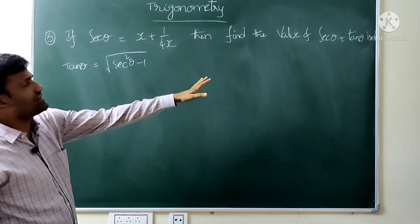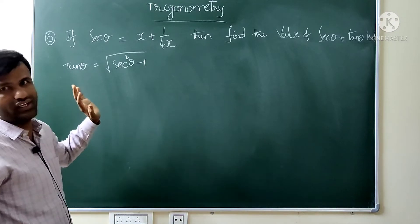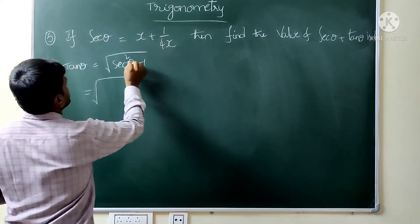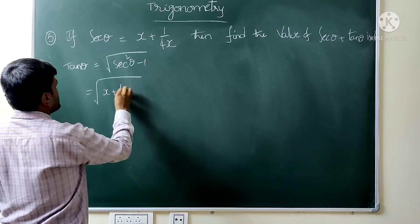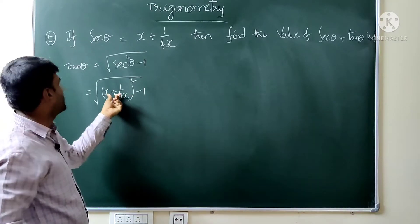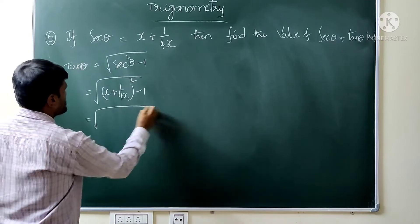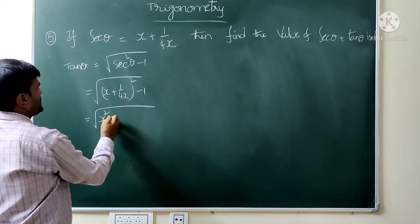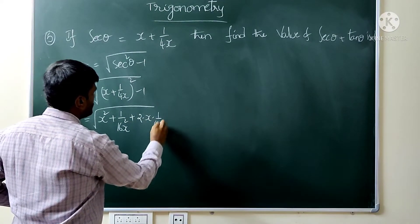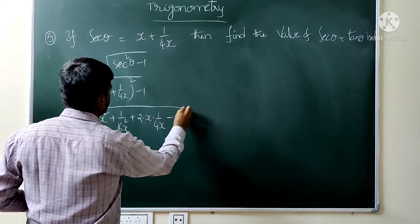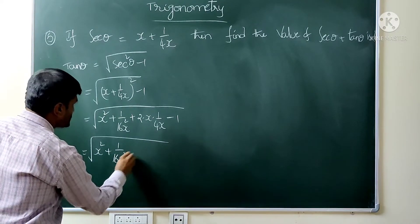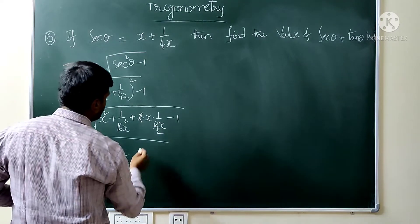Using the identity sec² θ minus tan² θ equals 1, substitute sec θ = x + 1/4x. Then sec² θ minus 1 becomes (x + 1/4x)² minus 1 = x² + 1/16x² + 2·x·(1/4x) minus 1 = x² + 1/16x² + 1/2 minus 1.